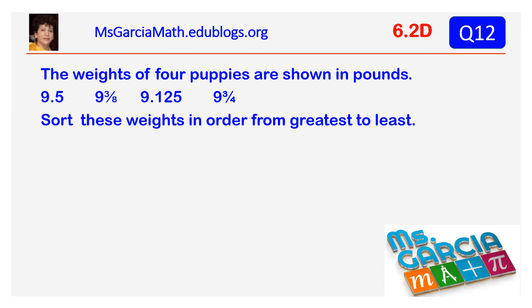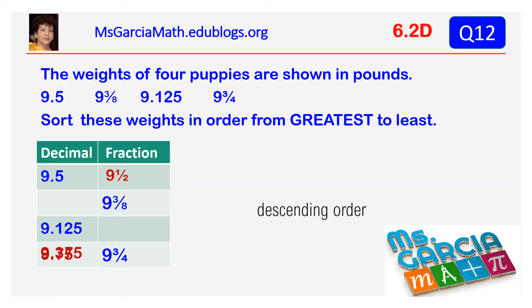The weights of four puppies are shown in pounds. Sort these weights in order from greatest to least. The answer is: nine and three-quarters, nine point five, nine and three-eighths, nine point one two five.